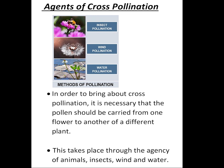Cross-pollination always depends on another agent to cause the transfer of pollen. The agents of pollination include birds, animals, water, wind and insects. In order to bring about cross-pollination, it is necessary that the pollen should be carried from one flower to another of a different plant. This takes place through the agency of animals, insects, wind and water.